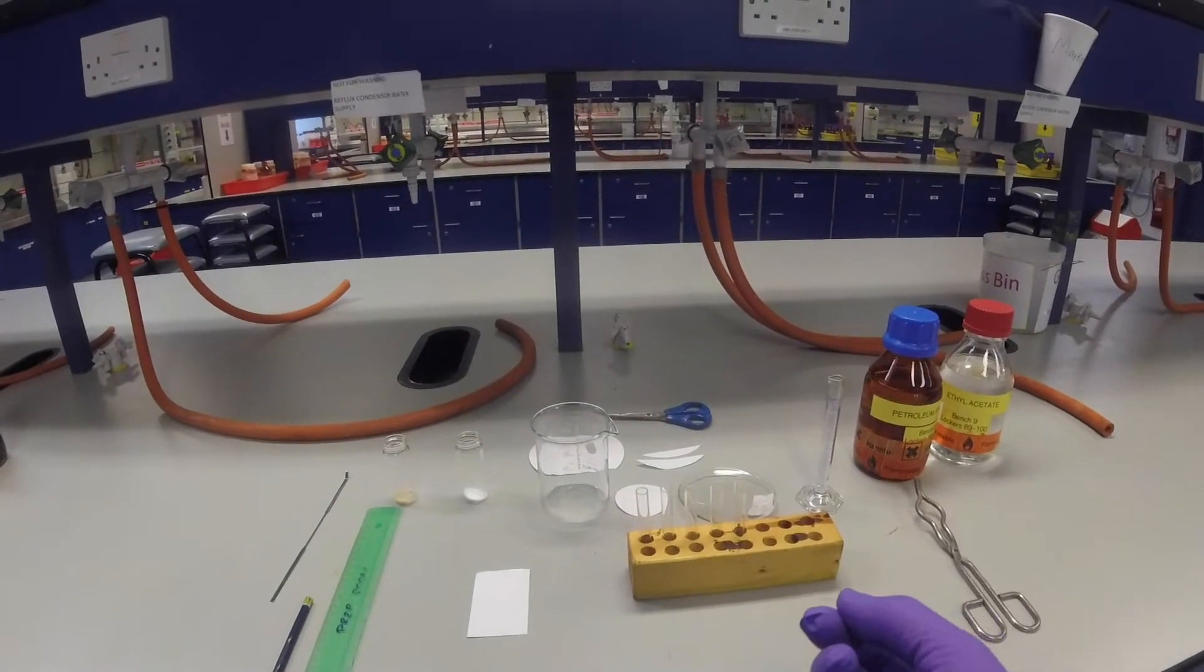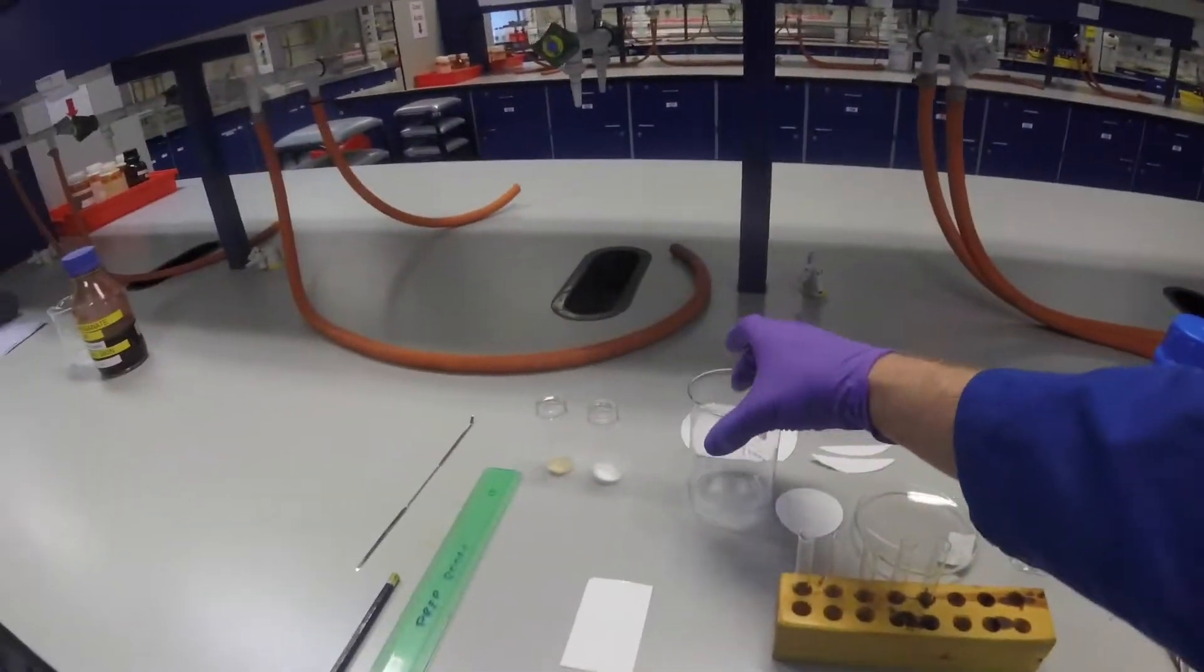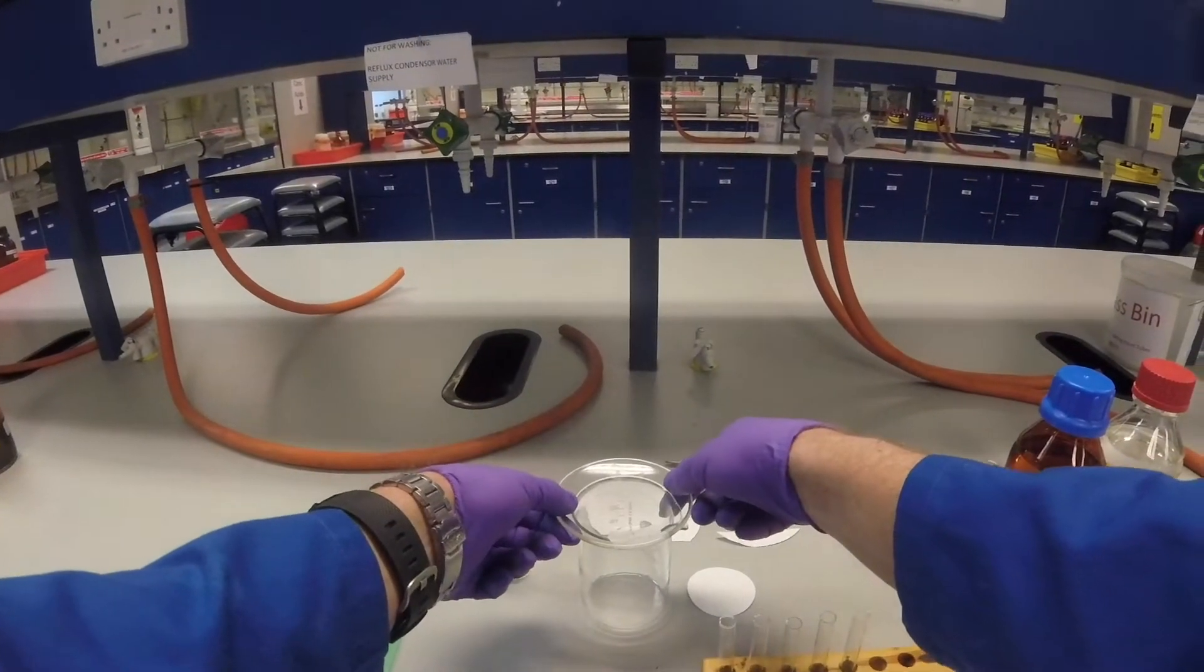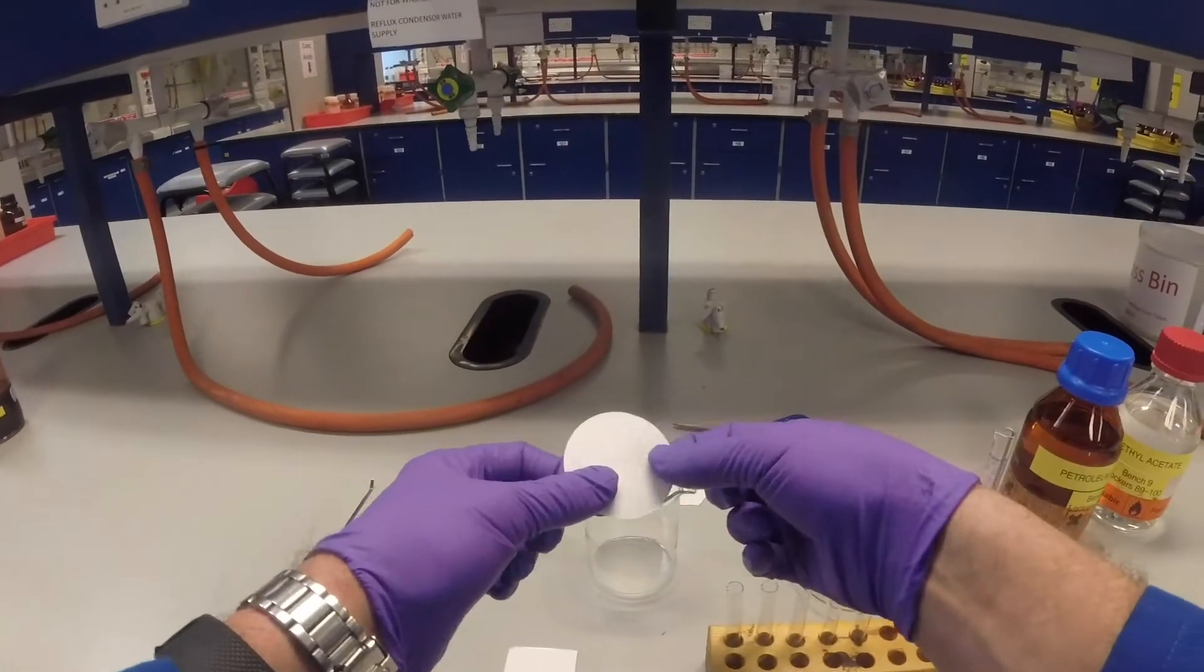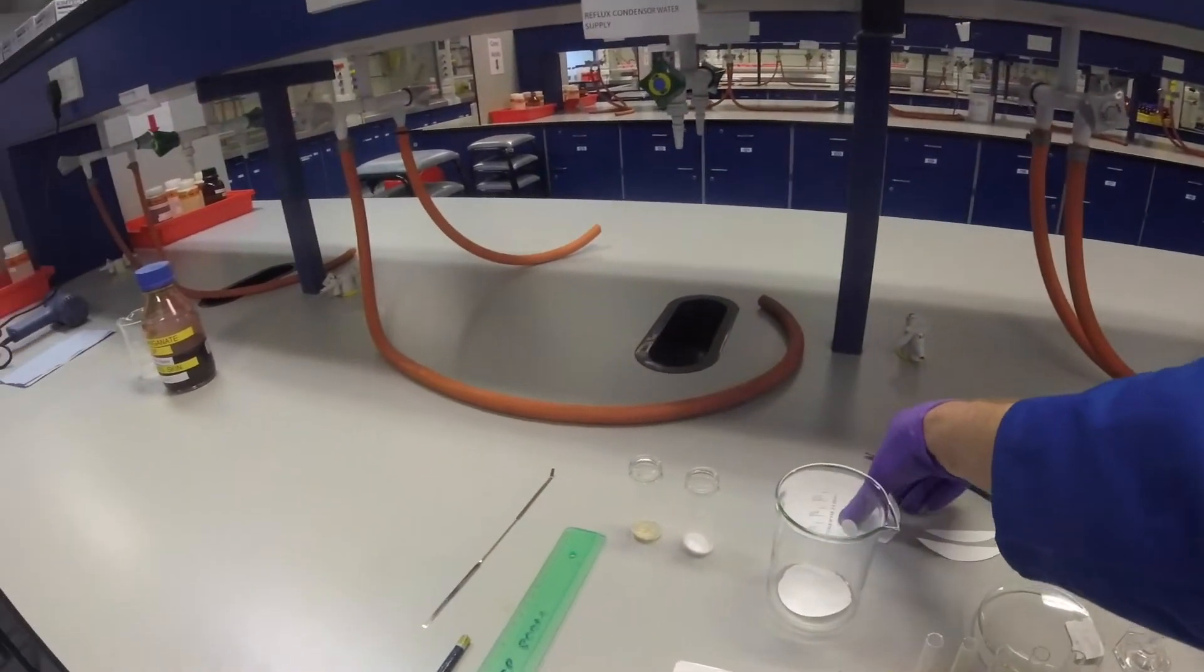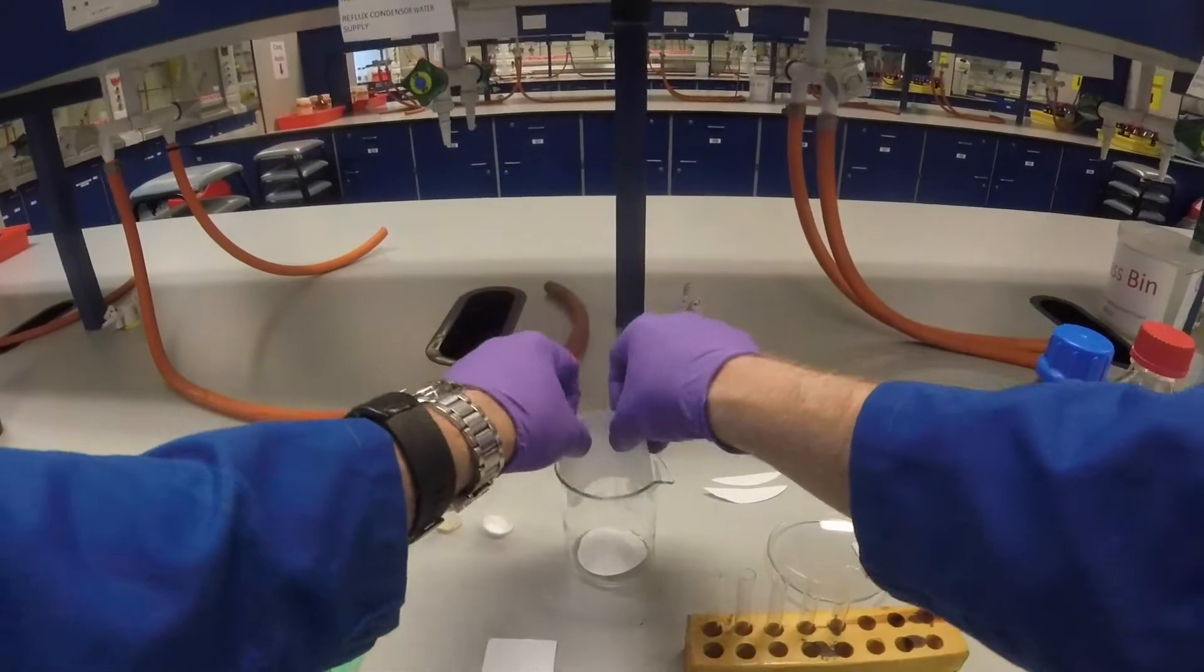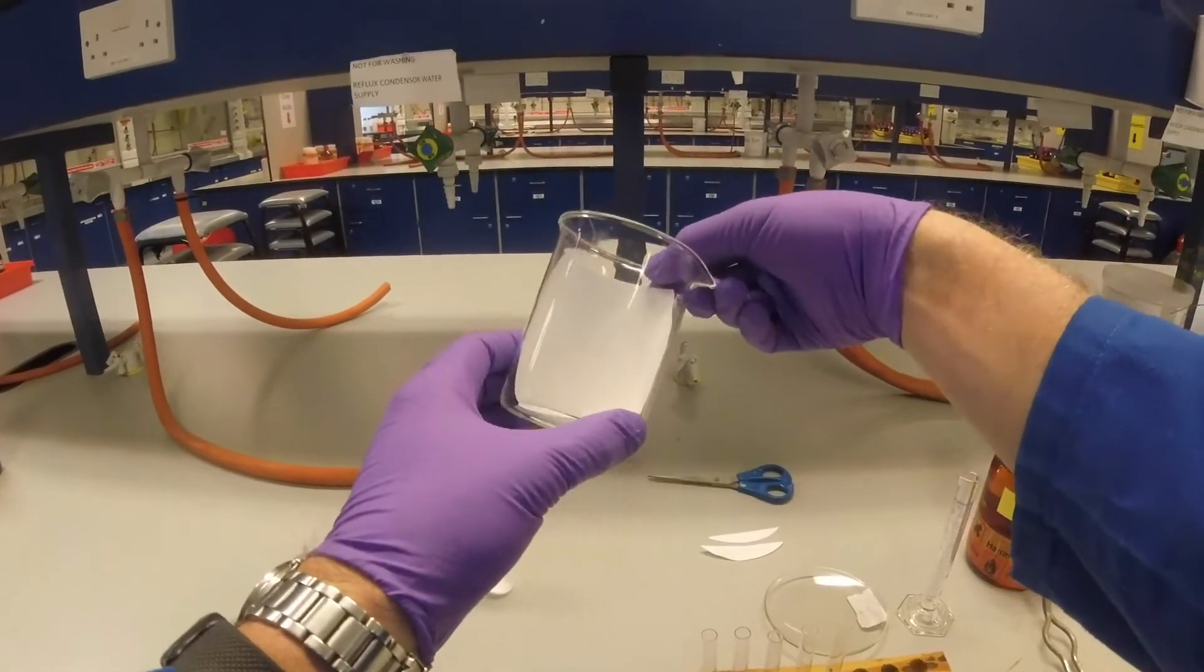The things you're going to need to do a TLC are your samples that we're going to check, a beaker to act as a TLC tank, a watch glass to go over the beaker to stop the solvent evaporating, a small piece of filter paper to go in the bottom to stop your TLC plate sliding around, and a larger piece of filter paper with the top and bottom edges cut off that lines the side of the TLC tank.